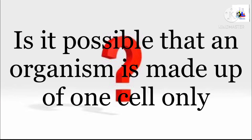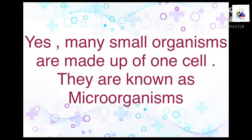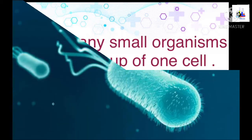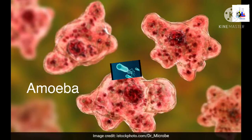One question arises: is it possible that an organism is made up of only one cell? The answer is yes. Many small organisms are made up of one cell only, and they are known as microorganisms. For example, bacteria and amoeba are microorganisms.